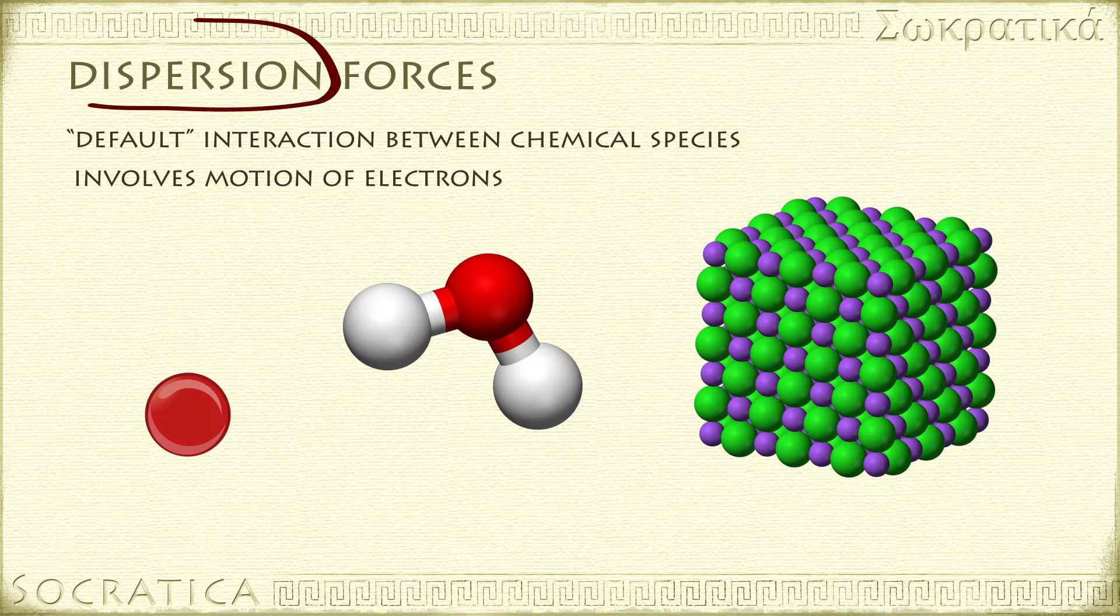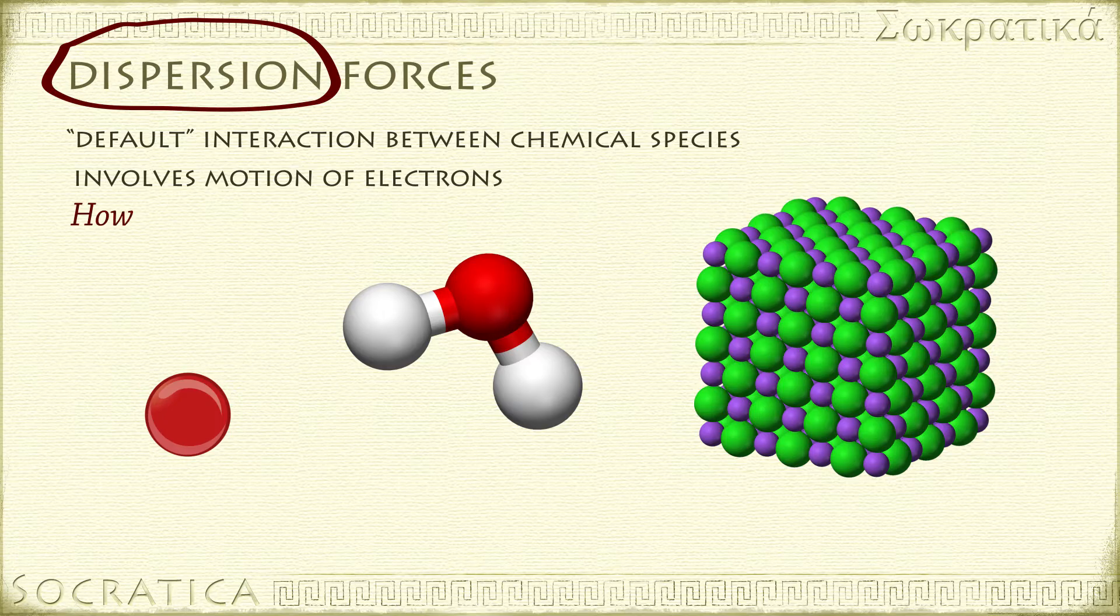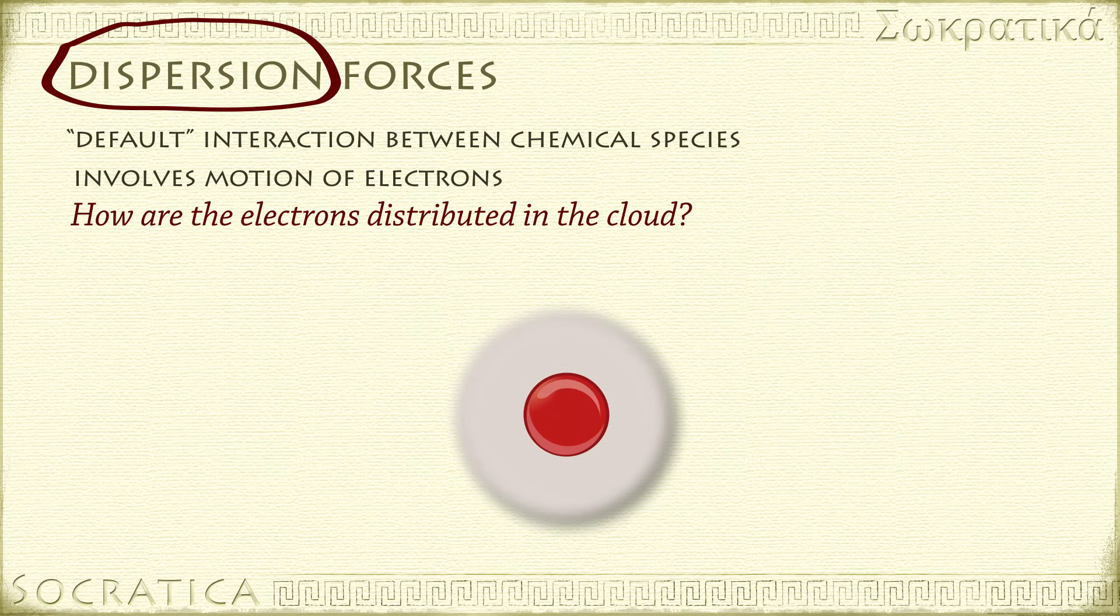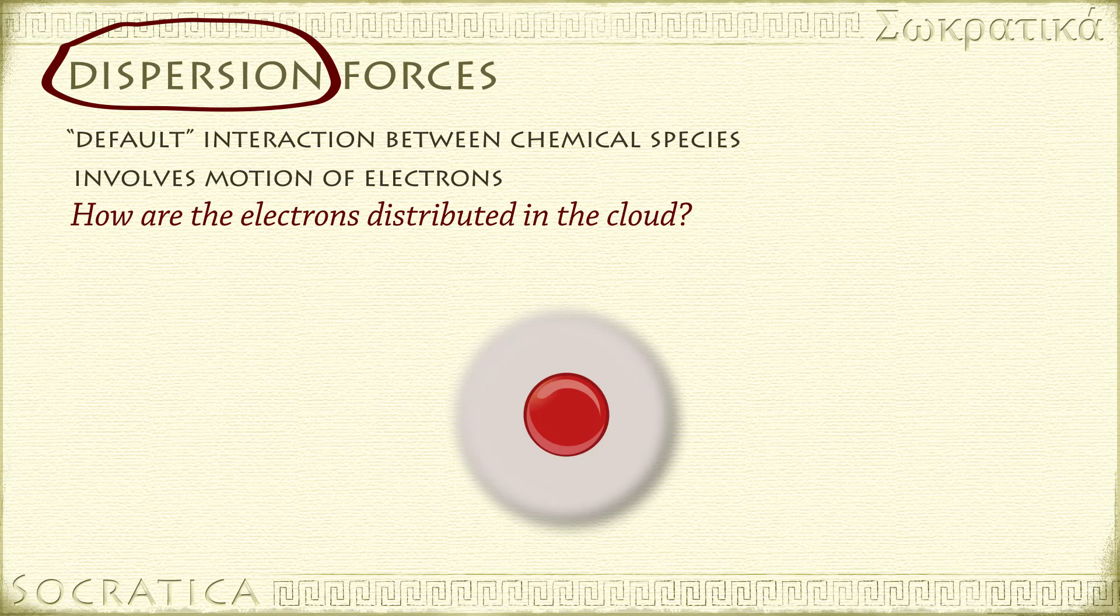Thinking about the word dispersion is the key to remembering this force. How are the electrons dispersed, or distributed, in the cloud around the chemical species? Are they absolutely evenly distributed? Yes, they could be, some of the time.